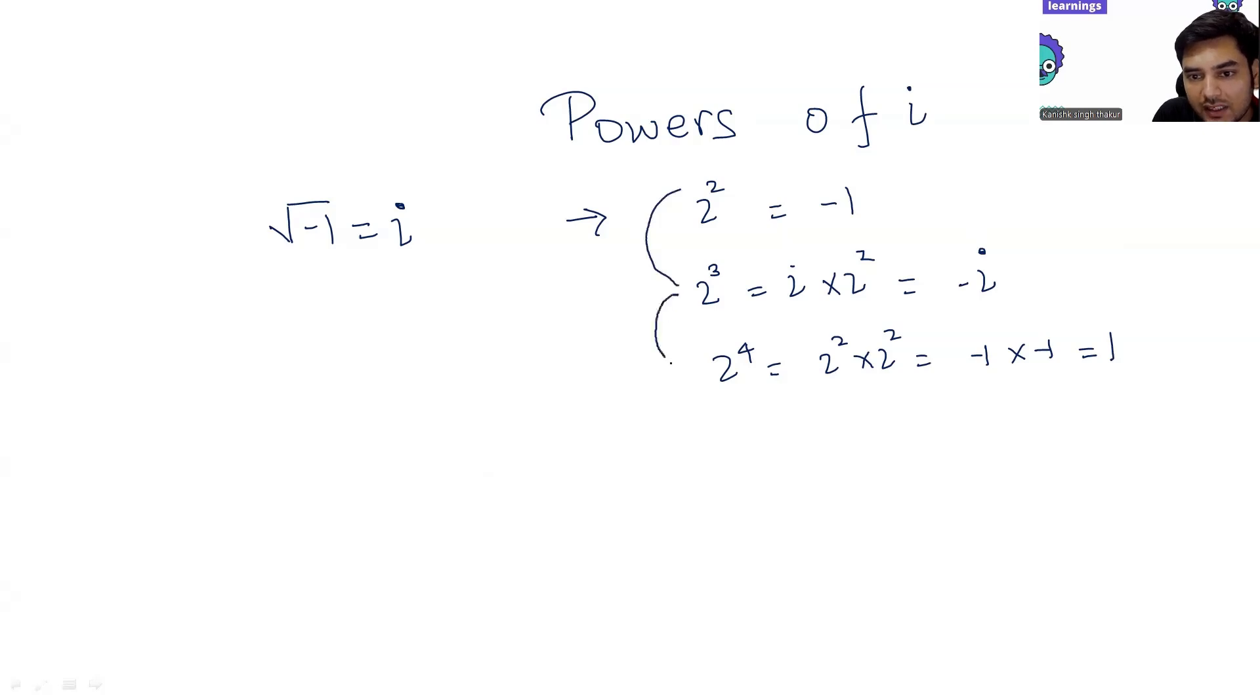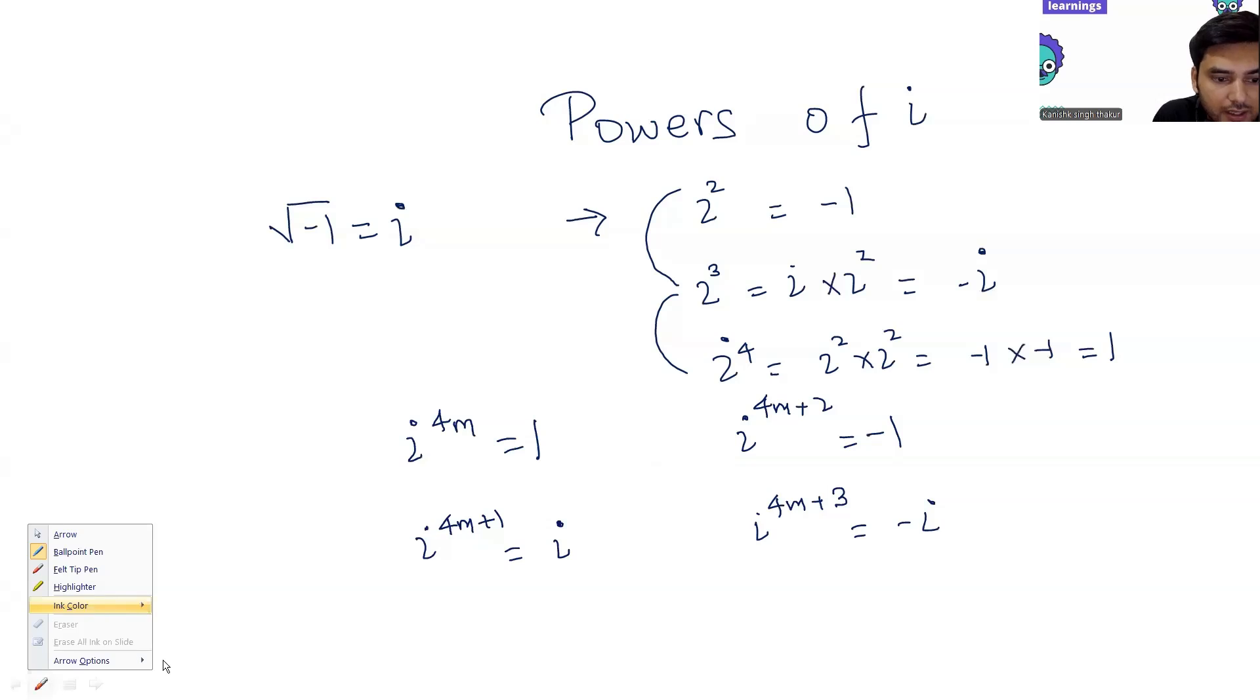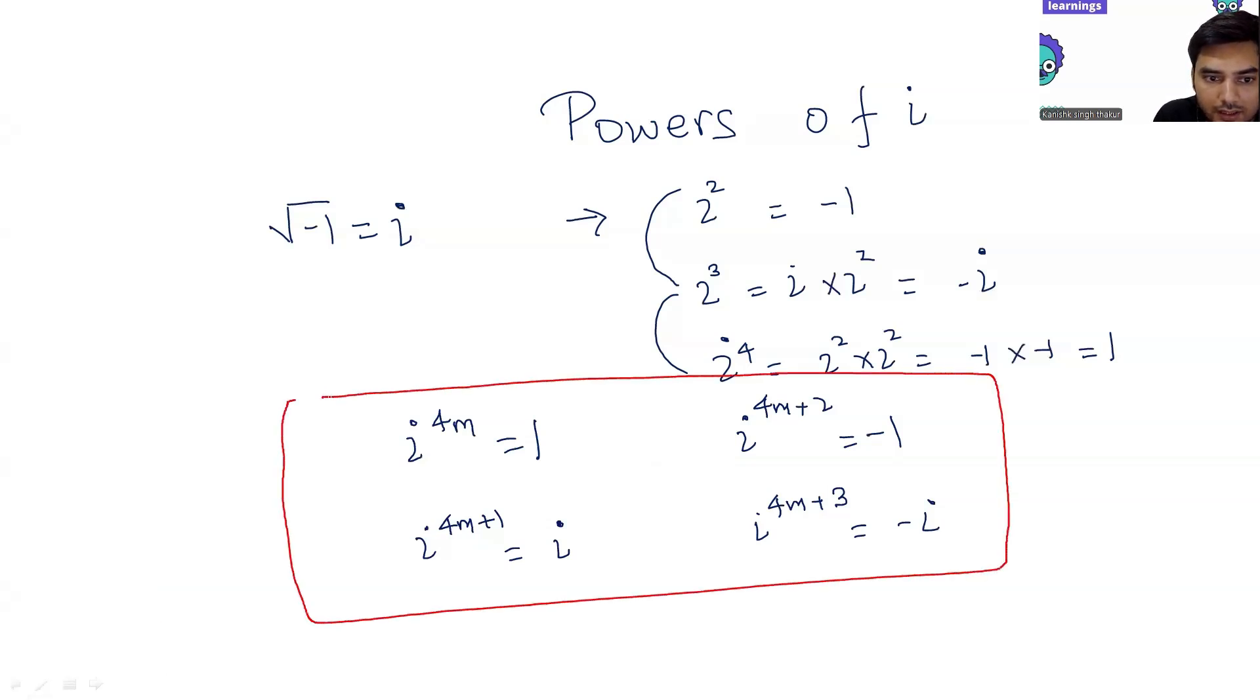So see what is happening. Whenever you have power 4, you are getting 1. Power 3, you are getting minus i. Power 2, you are getting minus 1. You have to remember that i to the power 4m will be 1, because every time the multiple of 4 would be there, it would be getting you as 1. If you have i to the power 4m plus 1, that will give you i. If you have i to the power 4m plus 2, that will give you minus 1. And if you have i to the power 4m plus 3, that will give you minus i. These four things you have to remember regarding the power of i.